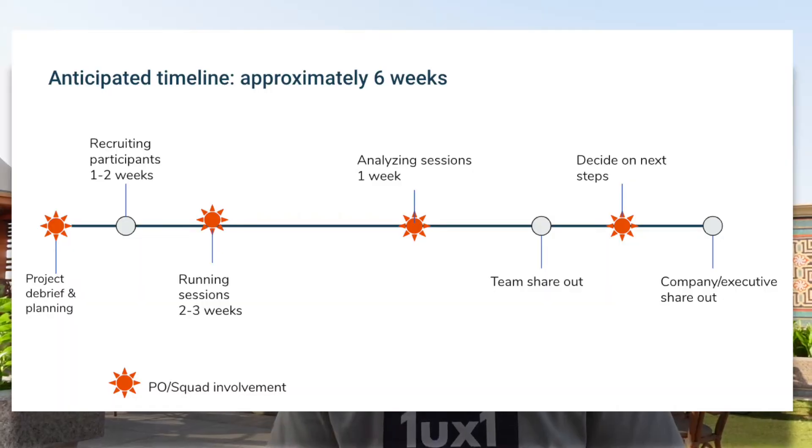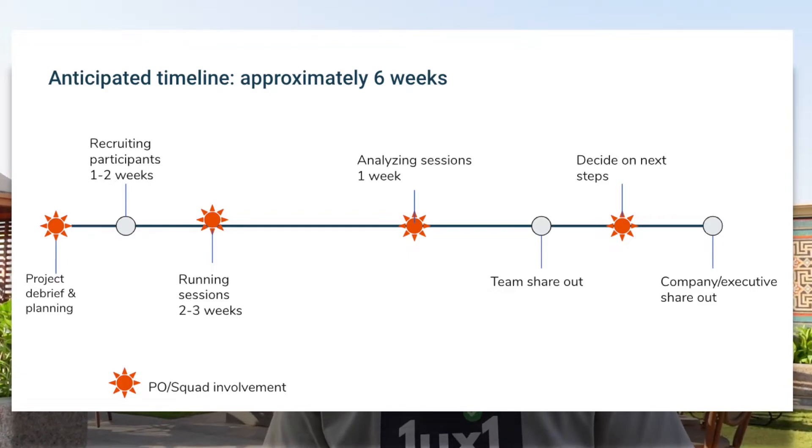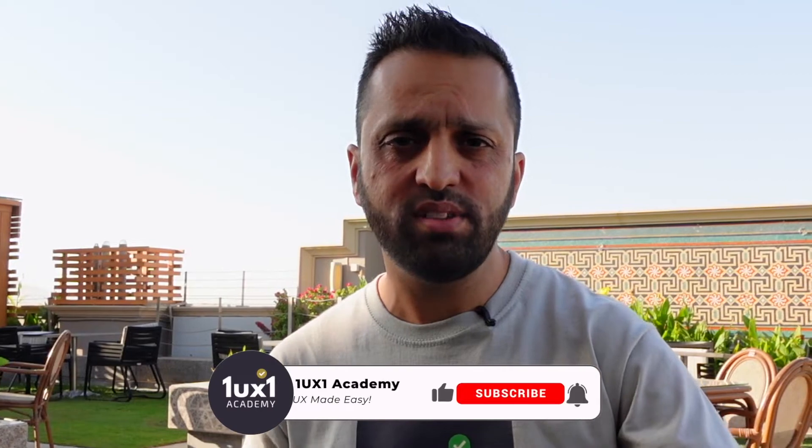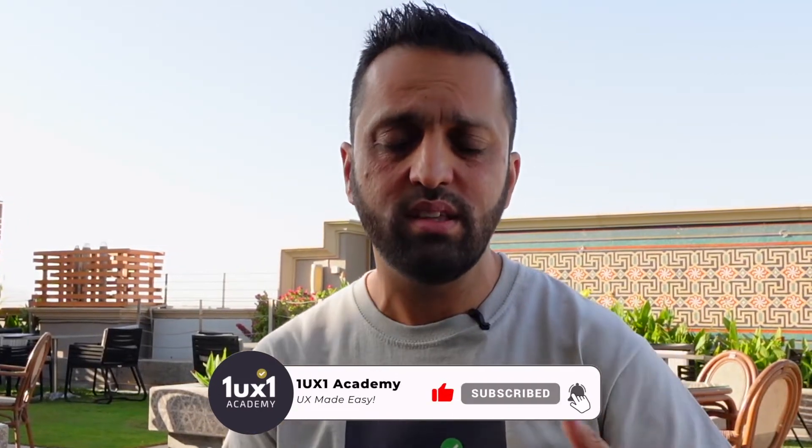Include dates and timelines in your user research plan — when are you going to do what? You need time for recruitment, time for testing, time to collate the data, to do a thematic analysis, report writing, and then sharing it with stakeholders. That can take six, eight, or twelve weeks depending on the project. On average, four weeks is enough: two weeks to plan, recruit, and run the user testing, and two weeks to analyze the data and write the report.